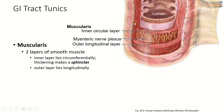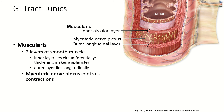The muscularis is the thickest layer, and there are actually two layers of smooth muscle in it. The inner layer is circumferential — it goes around — and the outer layer is longitudinal, running along the length of the GI tract. When one part of the GI tract meets another, such as where the stomach ends and the small intestine begins, this inner circumferential layer thickens into a sphincter. This is controlled by the myenteric nerve plexus, a nervous system intrinsic to the digestive system that controls contractions of these smooth muscles.